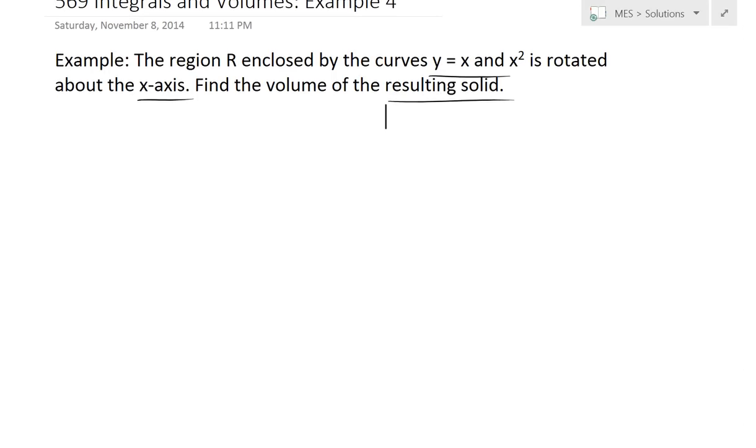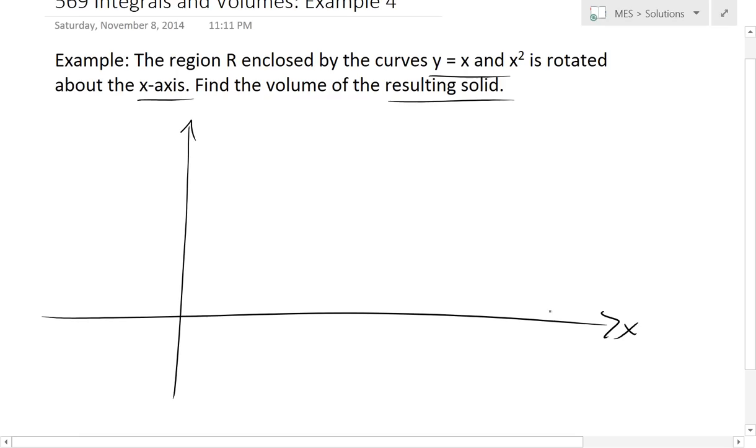So the first thing we should do is just graph this function out. We'll draw the x and y-axis right here. If you were to draw the curve y = x, that's just a straight line like that. And now x squared looks something like this.